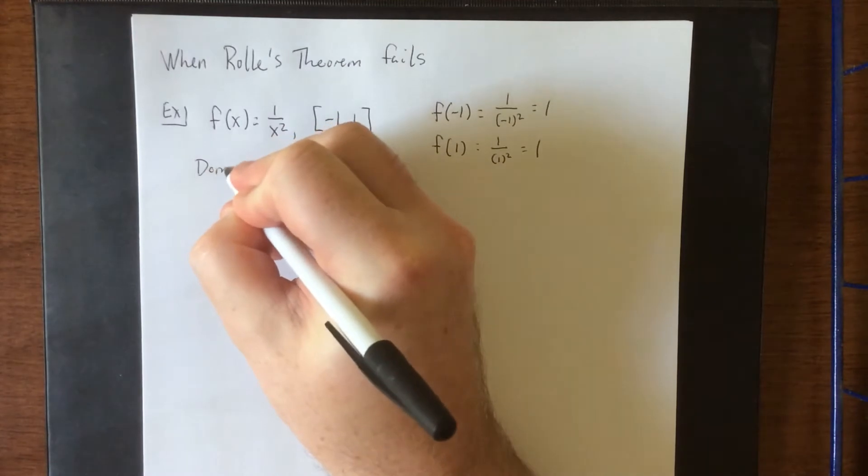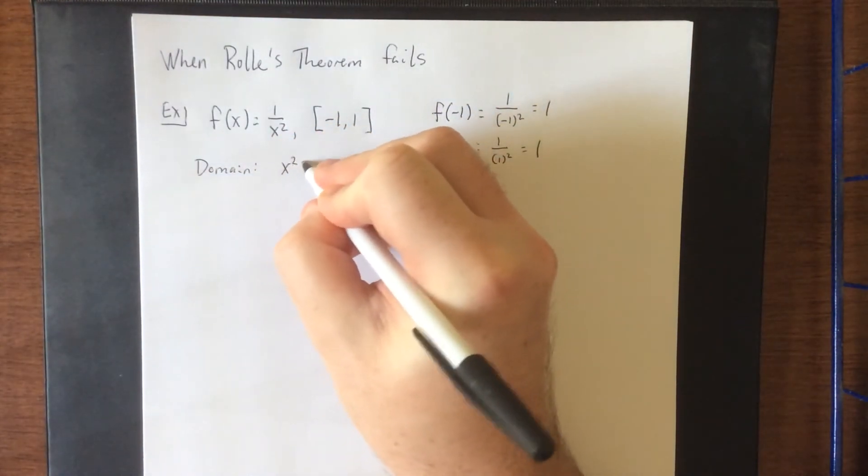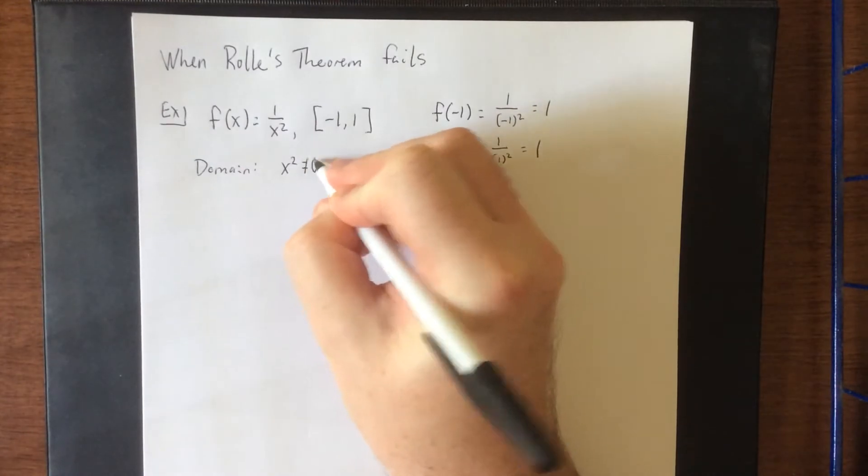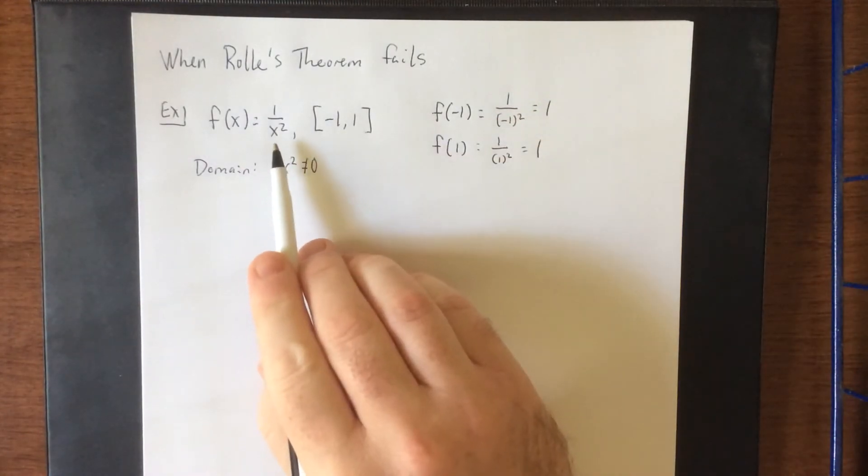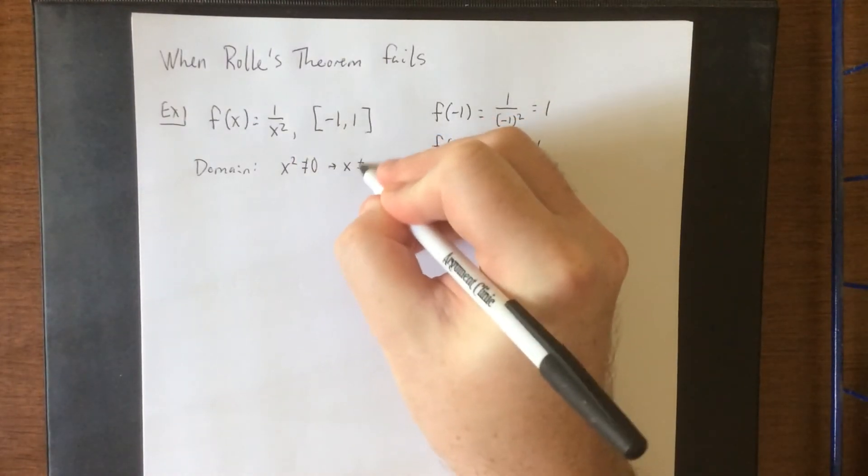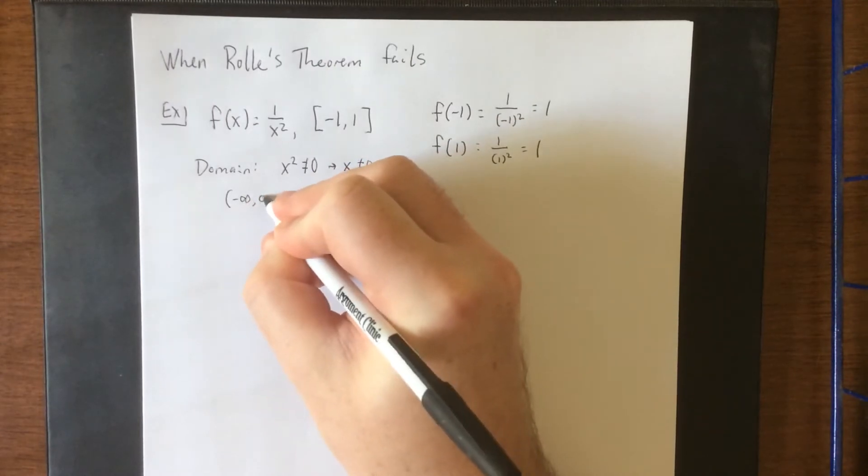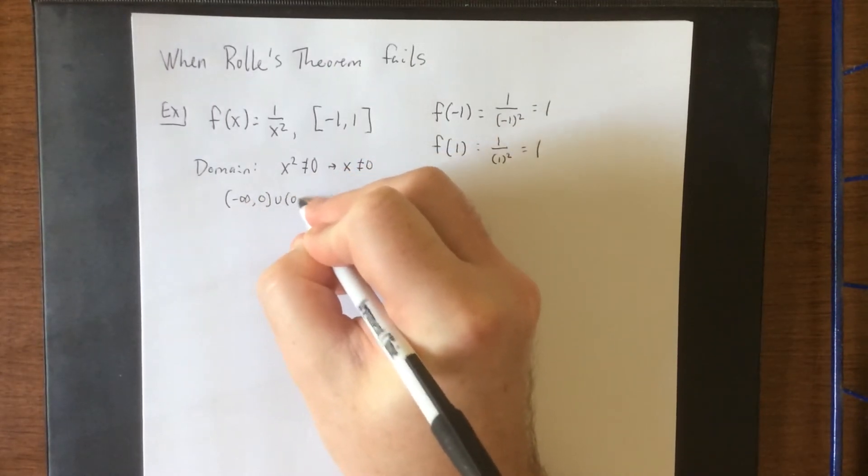But if you check the domain of the original function, because it's a rational function, the denominator is not allowed to be equal to 0, letting you know that x cannot be equal to 0. So the domain would be from negative infinity to 0 union 0 to infinity.